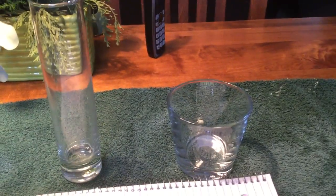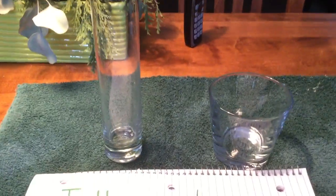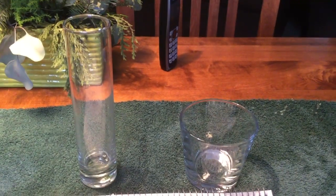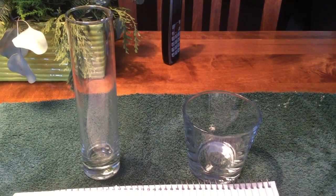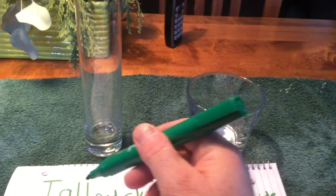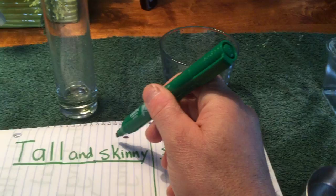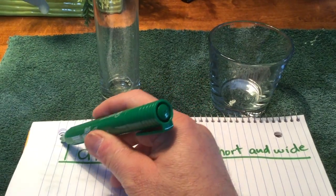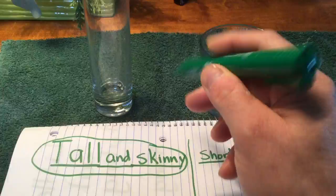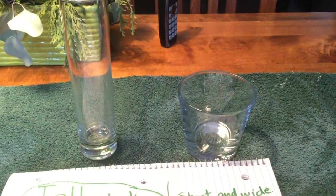So before I start, I am going to make a prediction and I really don't know which one is going to hold more. I'm going to guess it's maybe the tall and skinny one. So I'm going to guess that this one, I'm going to circle it here, that this is going to hold more. That's my prediction, but it could go the other way.